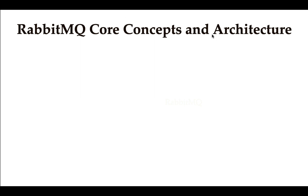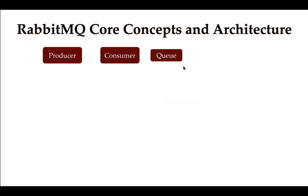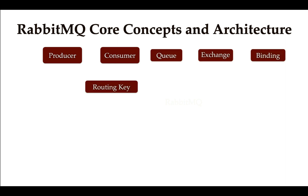We'll understand what is a producer, what is a consumer, what is a queue, what is an exchange, what is a binding, what is a routing key, and what is a message. Once we understand all these RabbitMQ core concepts, we'll move on to the architecture.